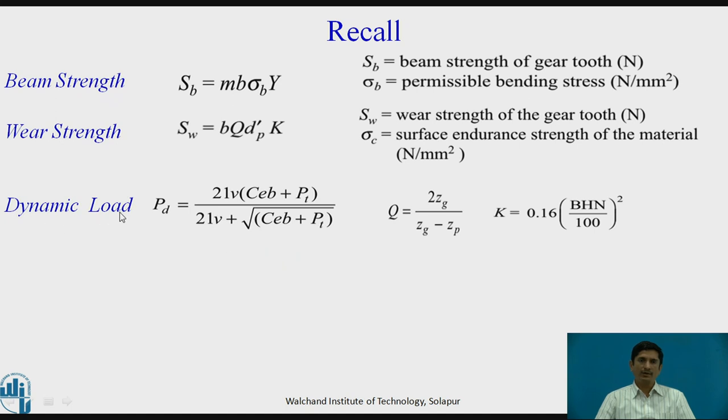The dynamic load is also given as Pd equals 21 V C Eb plus Pt upon 21 V plus square root of C Eb plus Pt. In this case, C is the deformation factor, E is the sum of the error in pinion and gear respectively. B is the face width and Pt is the tangential force and V is the pitch line velocity.